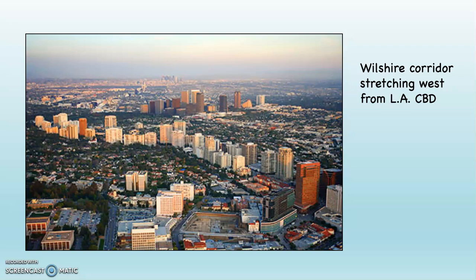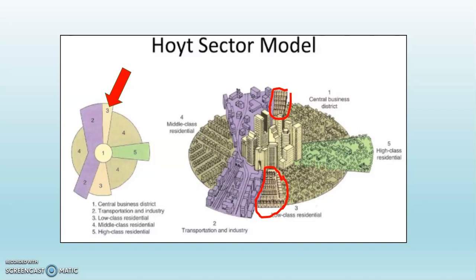It follows Wilshire Boulevard and it is lots of services — lawyers, management services, things related to the movie industry, all kinds of things like that. You can see what Hoyt called the low-class residential zone, which would be found next to the heavy industry and transportation corridor. I would not use that term — I'd call it working class. There is some validity to poorer neighborhoods accumulating in areas that are traffic-dense, pollution-dense, environmental hazard-dense, noisy, and lacking a wide range of social and recreational services and opportunities.